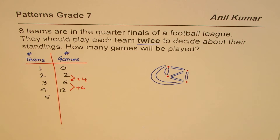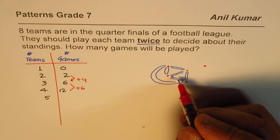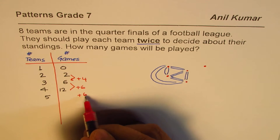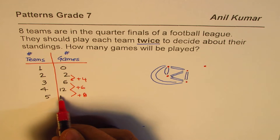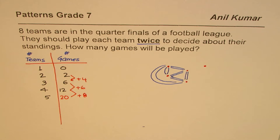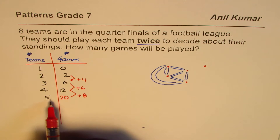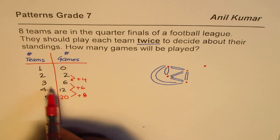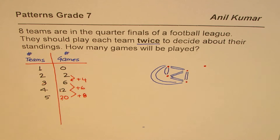If there is a fifth team, it's going to play two games with each of the four existing teams — that means eight more games. Eight plus twelve is twenty. Do you see the pattern? Twenty: five times four is twenty. Twelve: four times three is twelve. Six: three times two is six. Two: two times one is two.